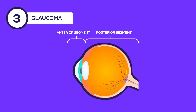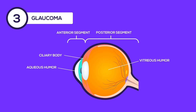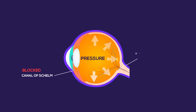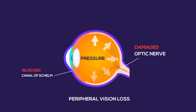Glaucoma. The eye can be divided into two parts: the anterior segment and the posterior segment. They are filled with two different fluids named aqueous humor and vitreous humor. Aqueous humor is secreted by the ciliary body and absorbed by a drainage system named the canal of Schlemm. If the canal of Schlemm is blocked for some reason, fluid gets accumulated and increases the pressure within the eye. This can damage the optic nerve and cause glaucoma, which is characterized by peripheral vision loss.